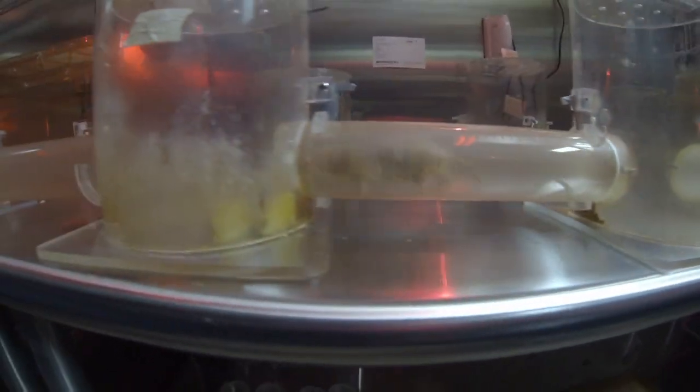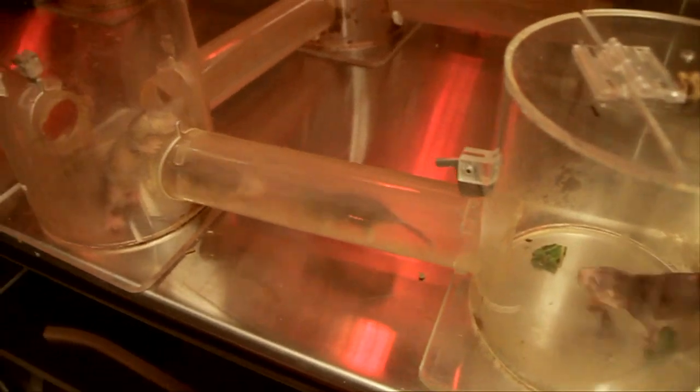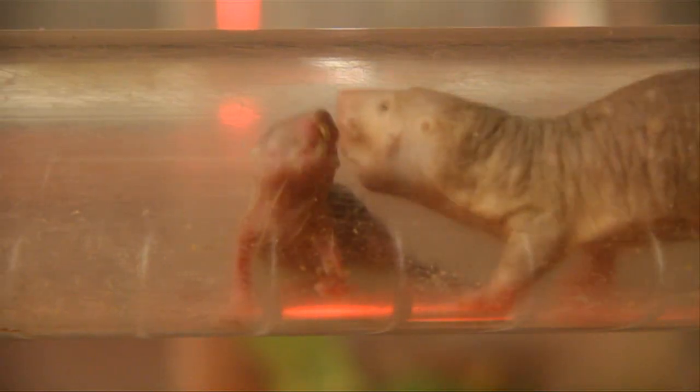This is the only true eusocial mammal, meaning they live in large colonies with one breeding queen. She mates with one or two favorite males, and the rest of the colony are soldiers, nannies, and cleaners—kind of like a colony of bees or ants. Yet these unique adaptations are relatively superficial to Dr. Gorbanova and Seluanov.